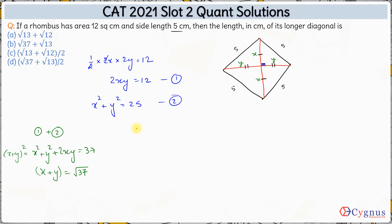Also if I subtract the first equation from second equation, I get x square plus y square minus twice of x into y is 25 minus 12 which is 13. So this gives me x minus y whole square is 13. Hence x minus y is square root of 13 here.